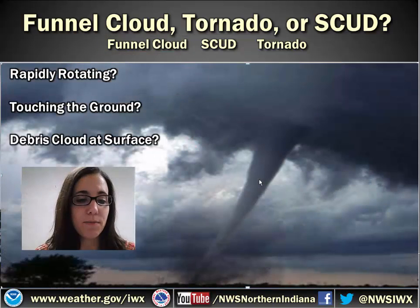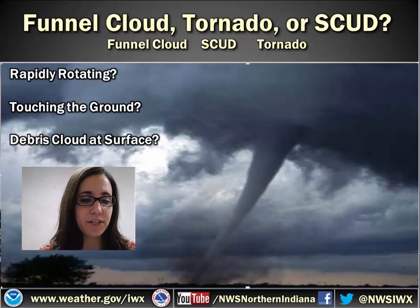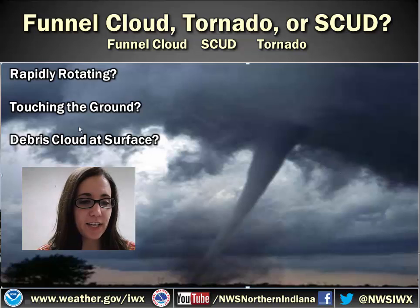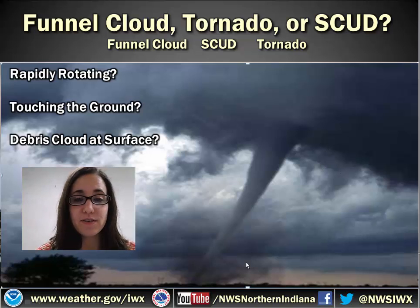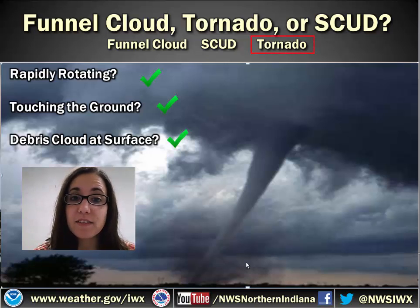This one is a little bit more straightforward. There is rapid rotation — you can tell it's very smooth, not very ragged and jagged like some of these other clouds over here. And there's a debris cloud at the surface. So since it's rapidly rotating, it's touching the ground, and there's a debris cloud at the surface, we can say that this is probably a tornado.